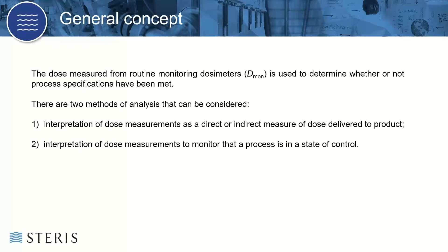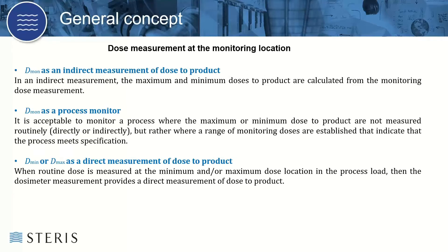There are two methods for this. One is interpretation of dose measurements from direct or indirect measurement of dose delivered to the product. The second is interpretation of dose measurements to monitor that the process is in a state of control. Indirect measurement means use of what we sometimes call a reference location, which has an established correlation to the minimum and maximum dose within the product load. TQ mapping determines this relationship. The calculated doses or indirect measurements have uncertainties associated with the dose at the monitoring location, as well as the uncertainty associated with the dose at the maximum or minimum locations and associated ratios, plus any other applicable components of uncertainty.